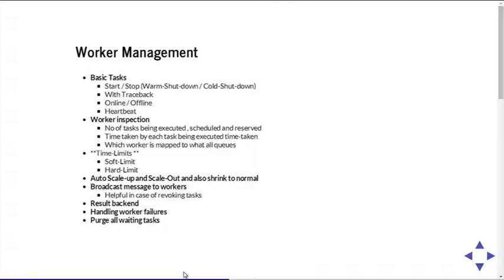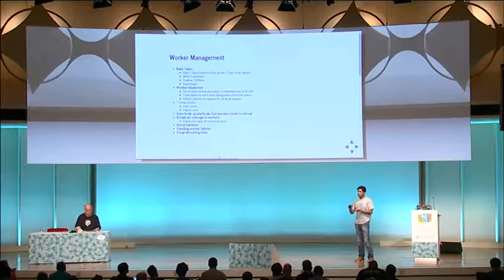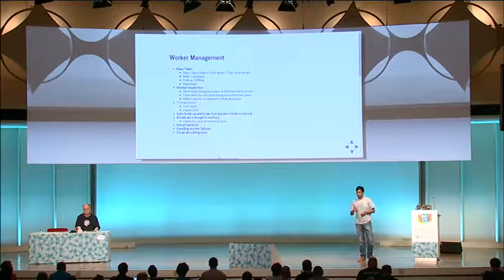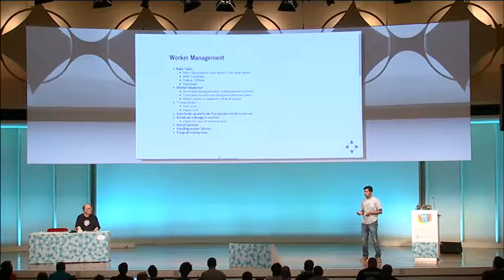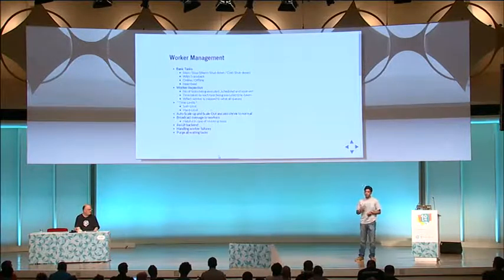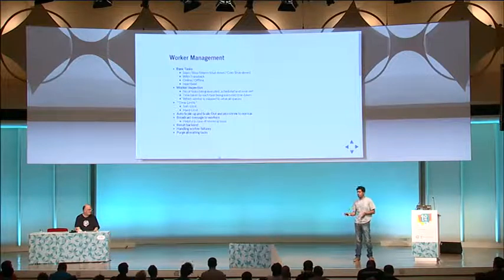Worker management: each task flows to a particular worker, which has multiple processes running. You can start and stop workers, do a warm shutdown (finish all tasks then go down) or a cold shutdown (stop immediately, potentially losing messages if acknowledgement is not set). If a task fails, Celery lets you import the tracebacks — what line it failed on and how. Celery also maintains a heartbeat so you know which workers are online or offline, which is critical in a distributed system.